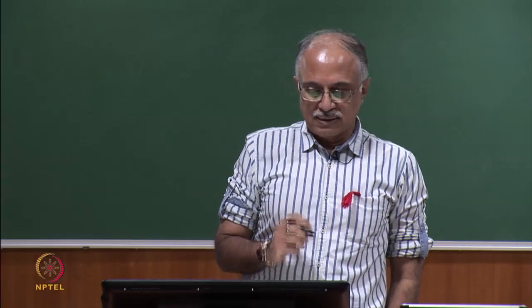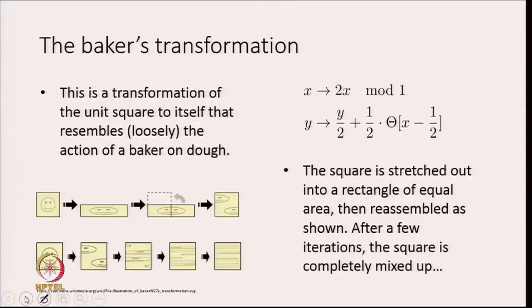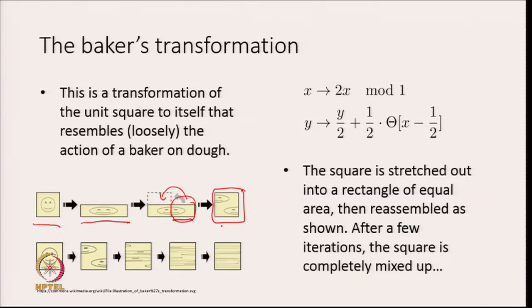The action of this Baker transformation is the following: you start with a unit square, stretch it out into a rectangle of half the height and twice the length — so that the area is the same — then cut the rectangle into two and put the second half onto the first, so that you get back a square. Through this transformation you can see that the area of the square has not changed.